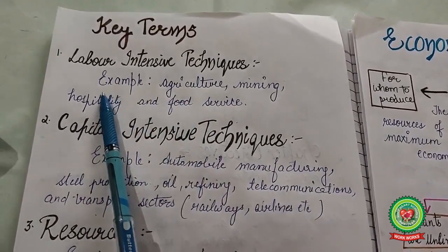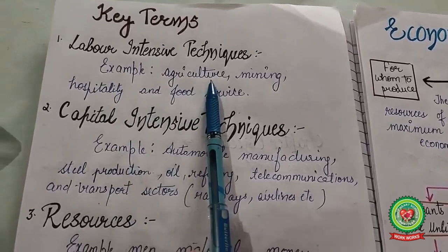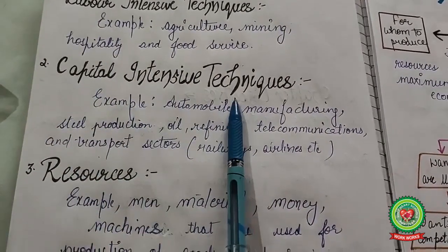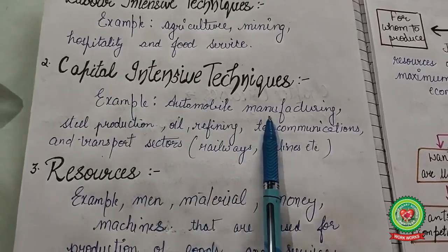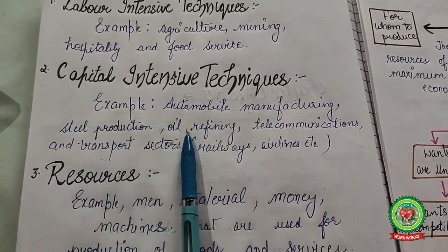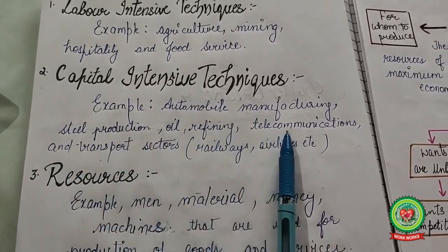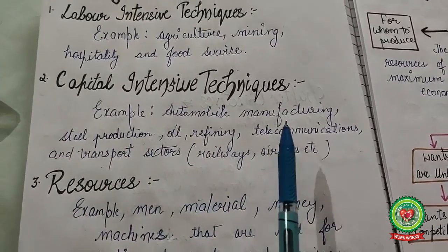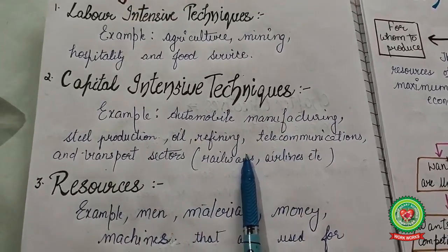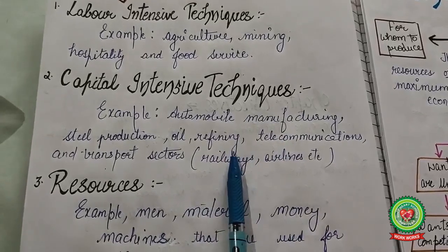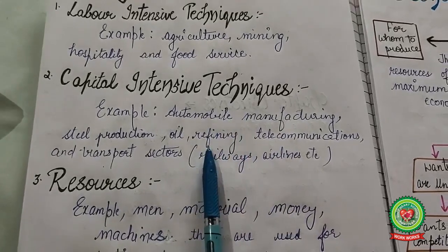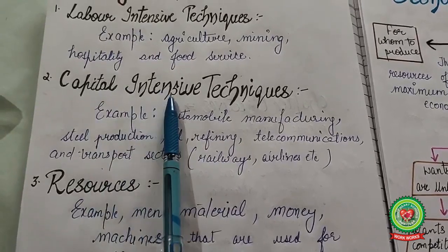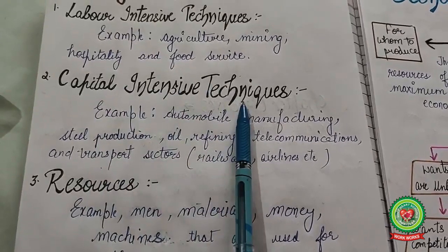Next is capital intensive techniques. Examples include automobile manufacturing, steel production, oil refining, telecommunication, and transport sectors like railways and airlines. These techniques use more capital — machines and tools — than labor.